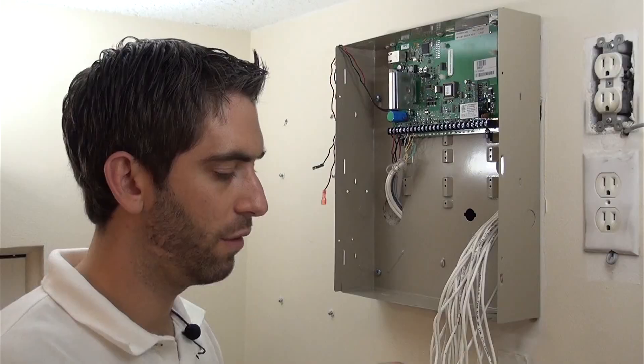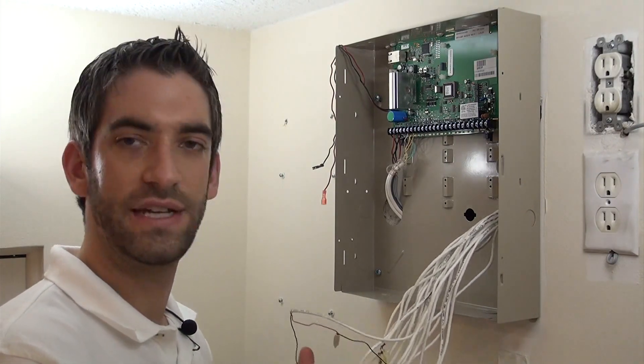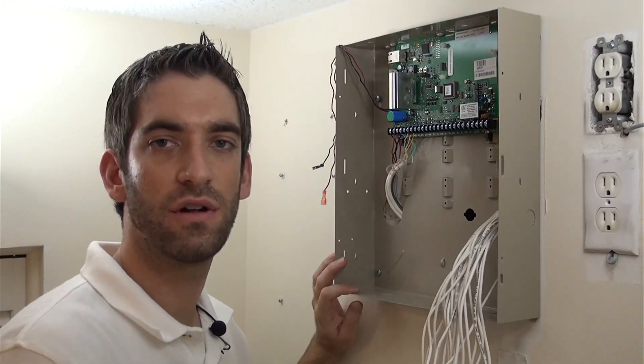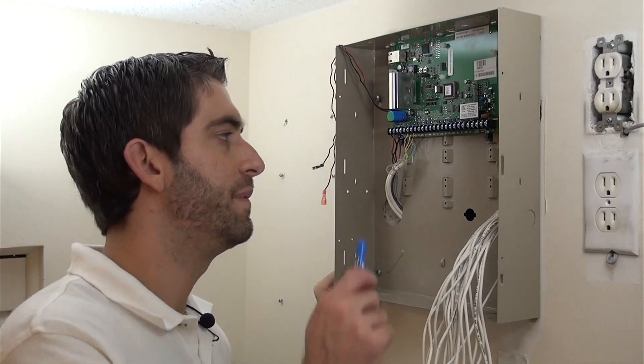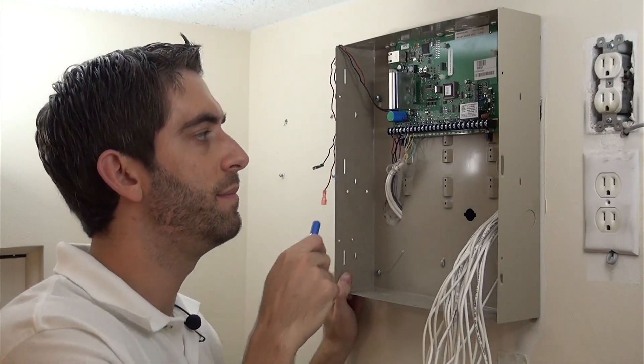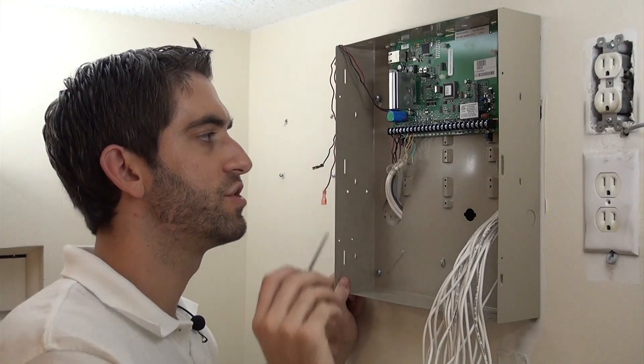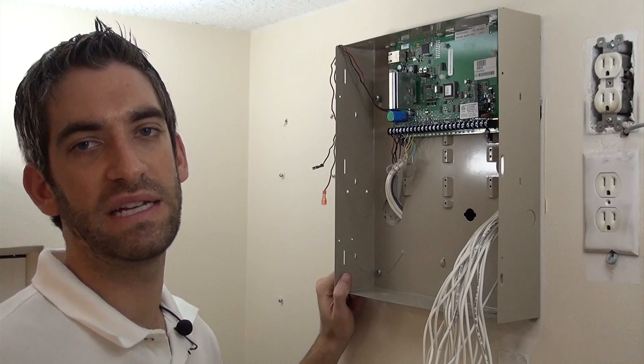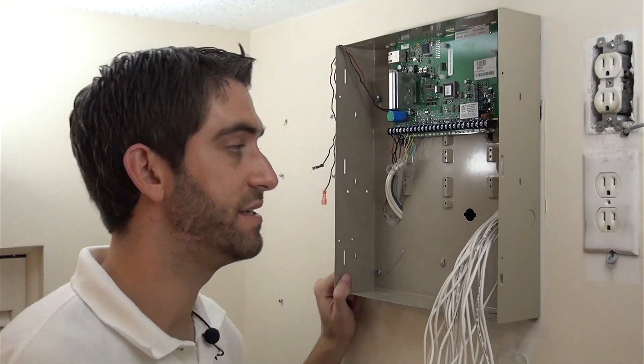And like I said from before, because we've got 14 zones here and our panel is only eight zones, we're going to use what's called zone doubling. You can't zone double zone one because that's the fire zone, but we can zone double zones two through eight to get a total of 15 zones from our base panel. And that's what we're going to do to break out these zones.